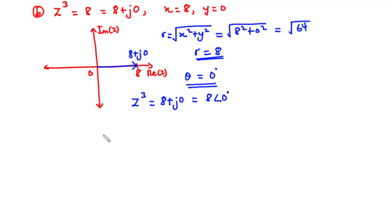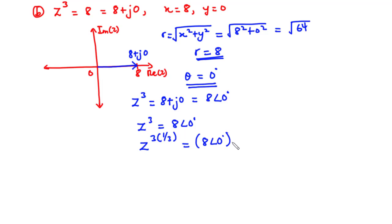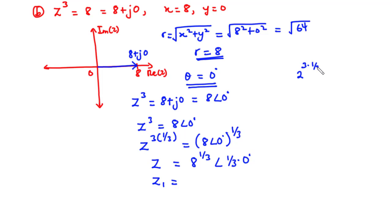Now let's make z the subject. We multiply the exponents by 1 over 3, so z equals 8 to the power 1/3 at angle 1/3 times 0°. Now 8 to the power 1/3 is the same as 2 cubed to the power 1/3, so the 3s cancel, leaving 2 to the power 1, which equals 2. Therefore, z1 equals 2∠0°, since 1/3 times 0 is 0. This is the first solution to z cubed equals 8 plus j0.